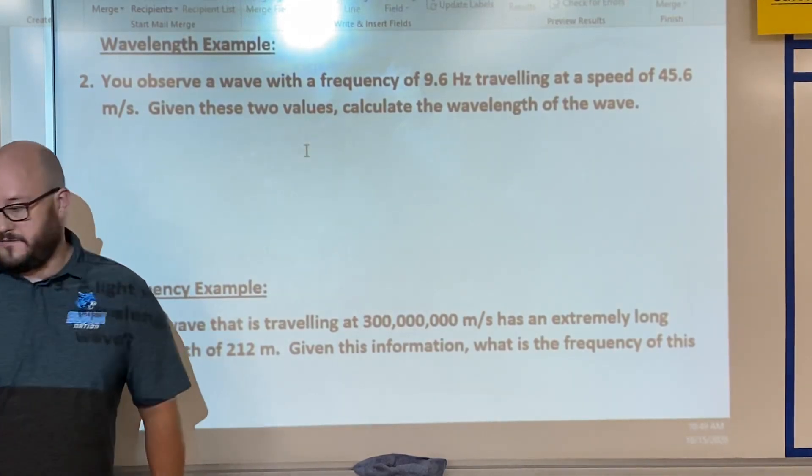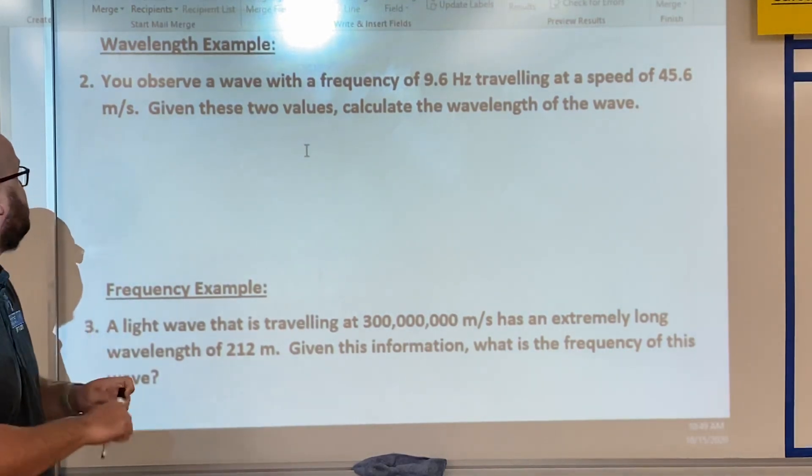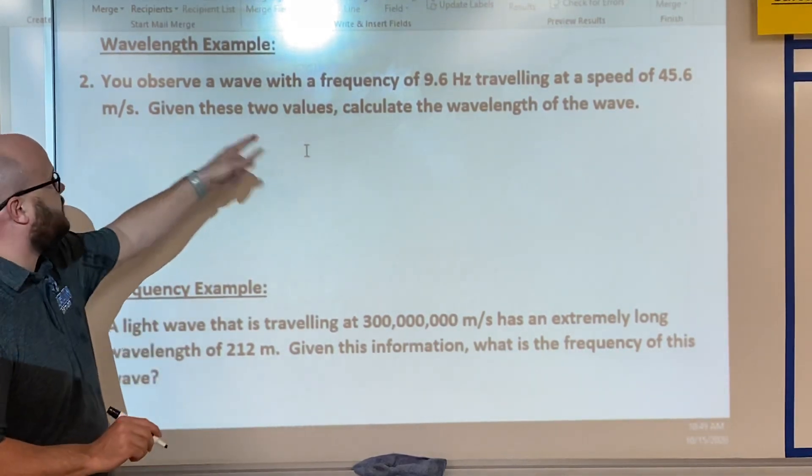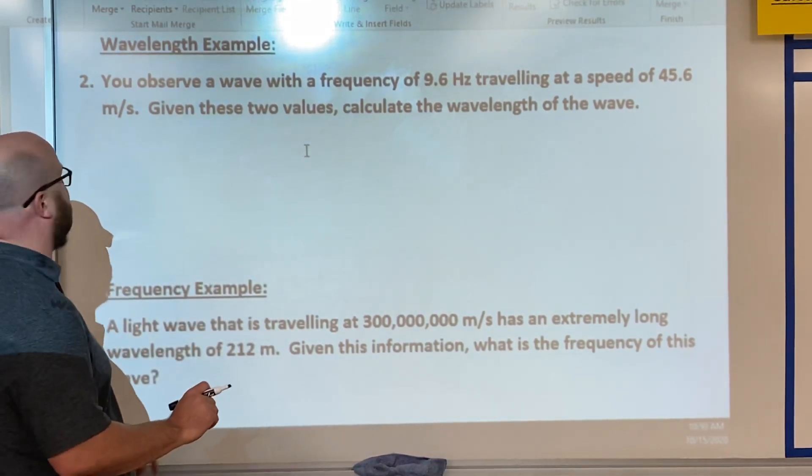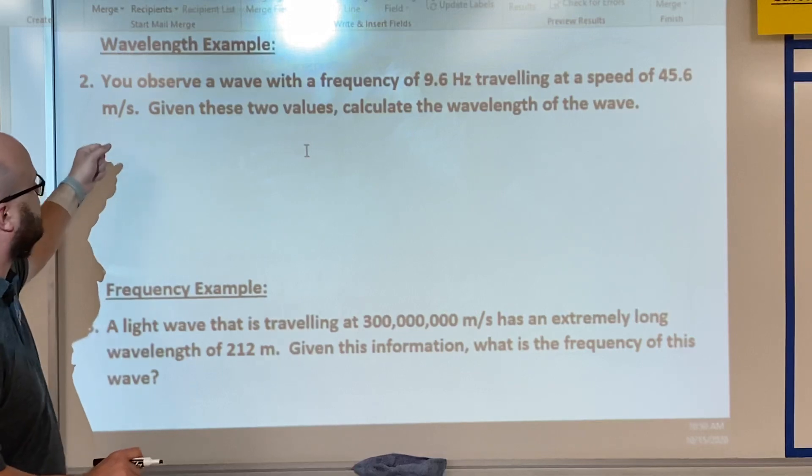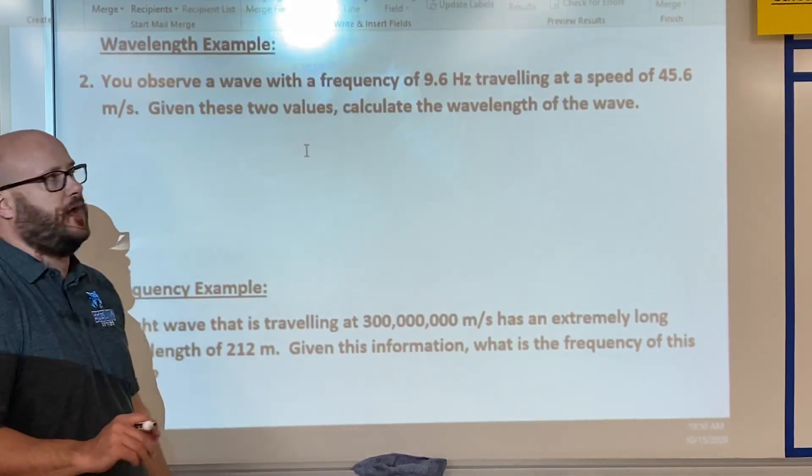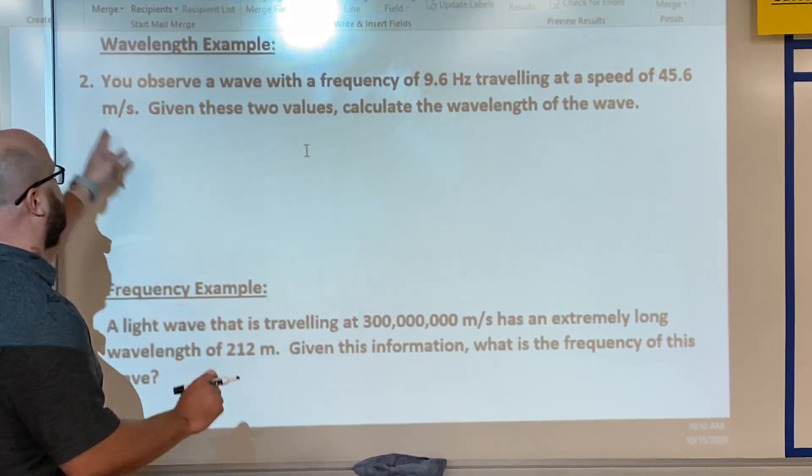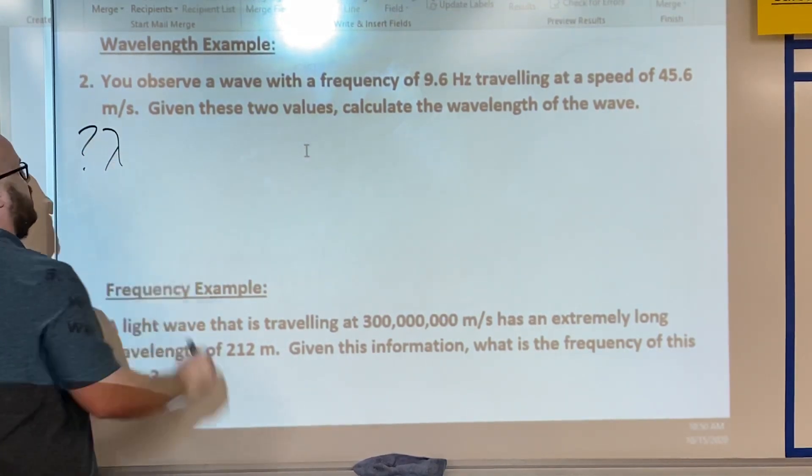Okay, this is a wavelength example. You observe a wave with a frequency of 9.6 Hertz traveling at a speed of 45.6 meters per second. Given these two values, calculate the wavelength of the wave. So again, we're solving for lambda or wavelength.